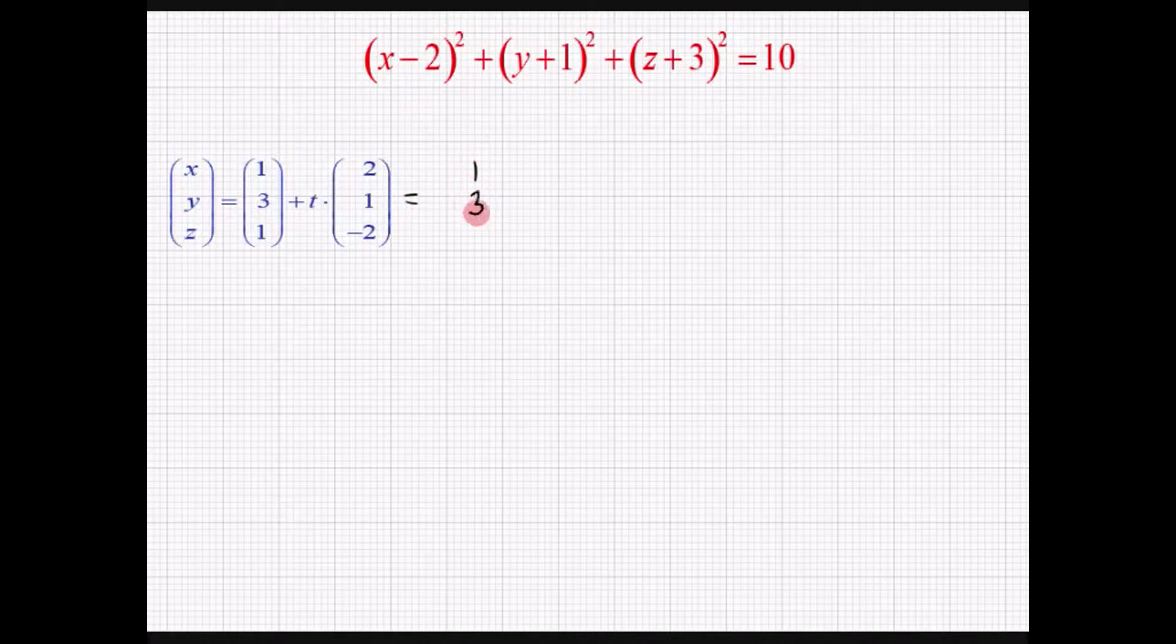Vi har her konstanterne. Og vi har her 2 gange t. Vi har t og i sidste række minus 2 gange med t. Så vi skriver altså parameterfremstilling ud i 3 koordinatligninger.